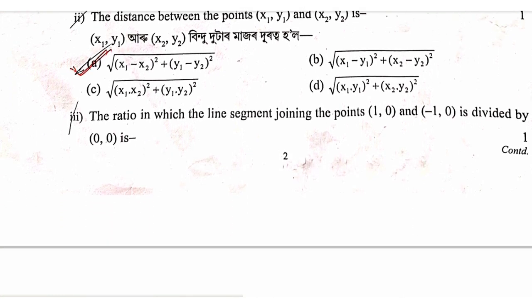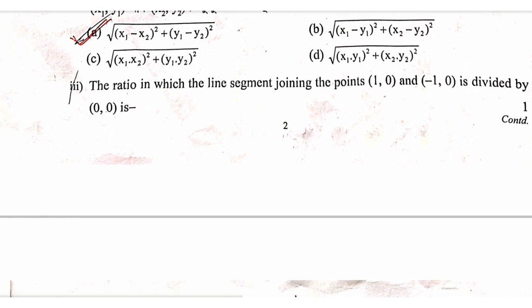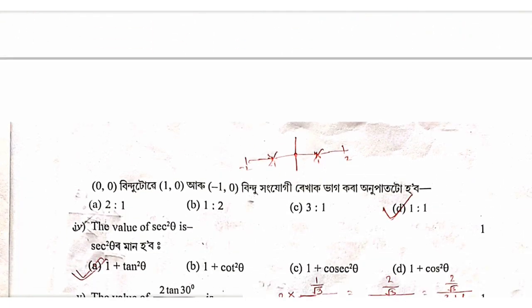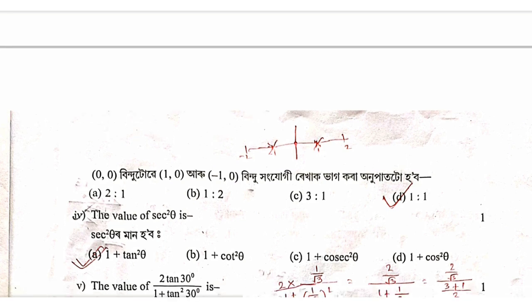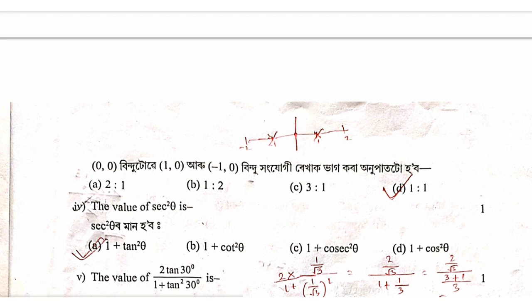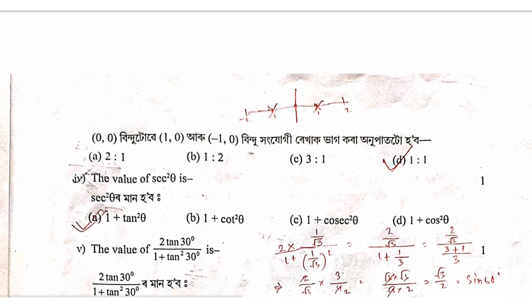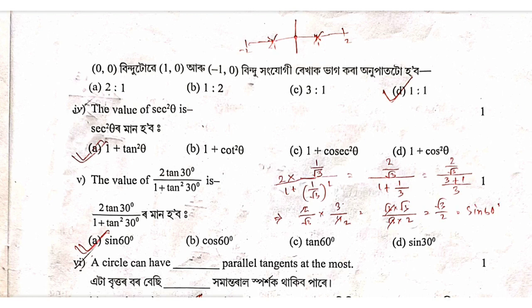The next question asks for the ratio in which the line segment joining the points 1, 0 and minus 1, 0 is divided by the point 0, 0. Since 0, 0 is the midpoint, it is equidistant from 1, 0 and minus 1, 0. Therefore the ratio is 1 is to 1.